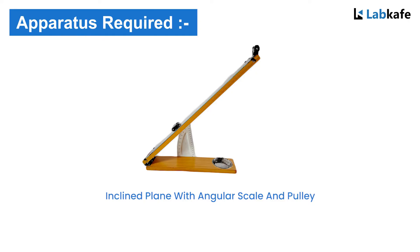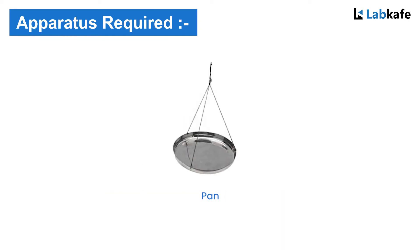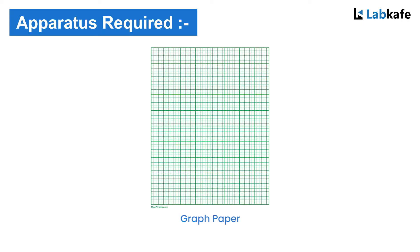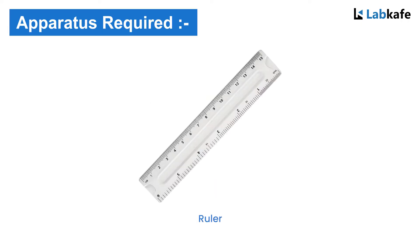Apparatus required: an inclined plane with angular scale and pulley, roller, a pan, a spring balance, weight box, graph paper, pencil, and a ruler.